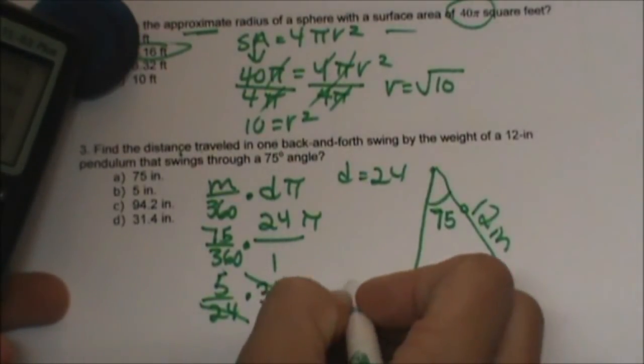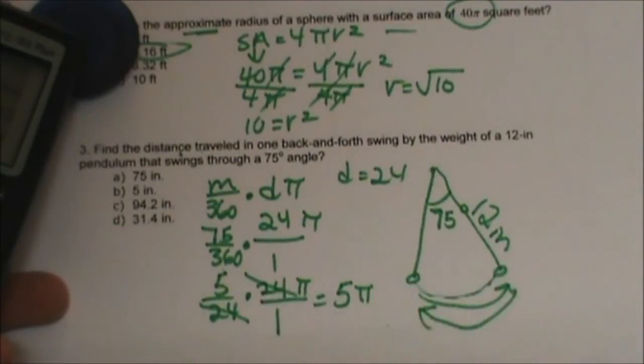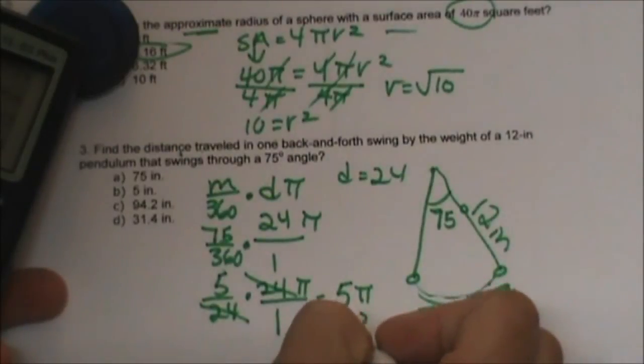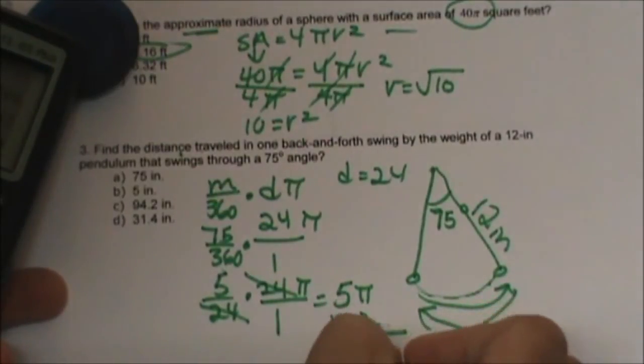So 24 cancels out and I am left with 5 pi. Now remember that is only one swing, that is just over, so I have to take that and multiply it by 2 so I am going to get 10 pi.